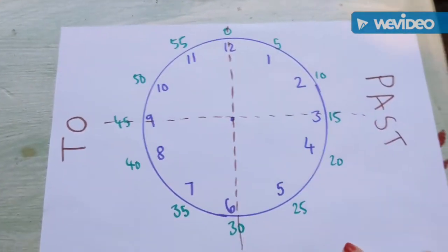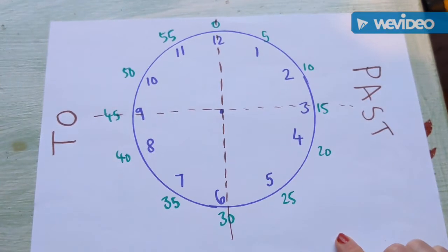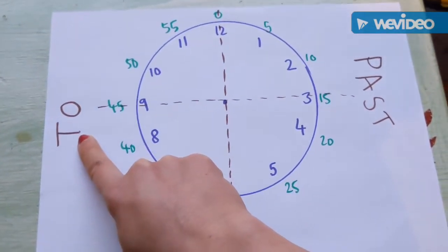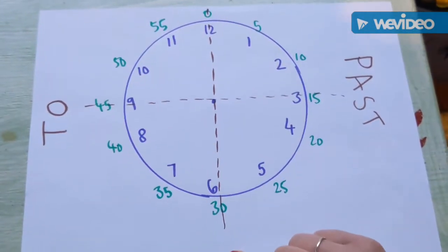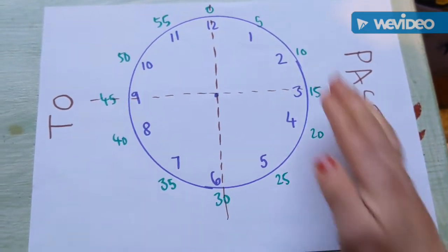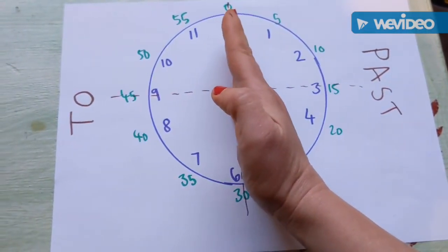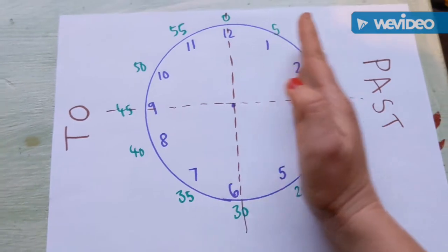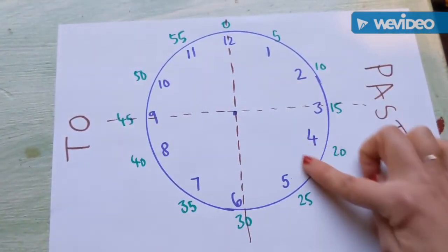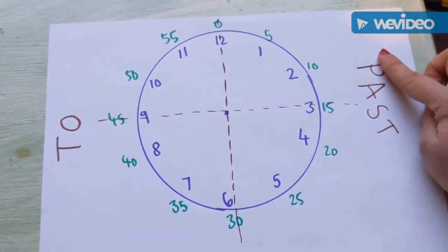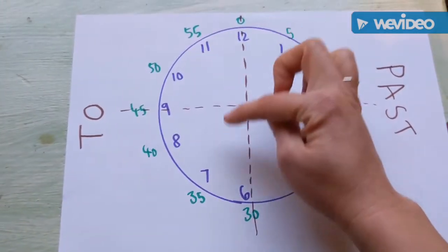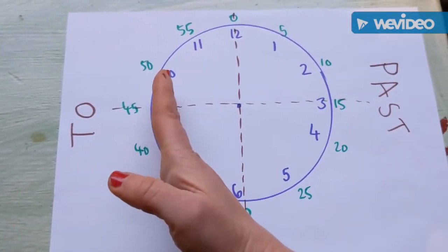You might also notice that on this side I've written 'past' and on this side I've written 'to'. When the minute hand is in this half of the clock - both of those quarters - this is the past side of the clock, so we'd say it's something past. When the minute hand is in this half of the clock, in either of these two quarters, we'd say it's something to.